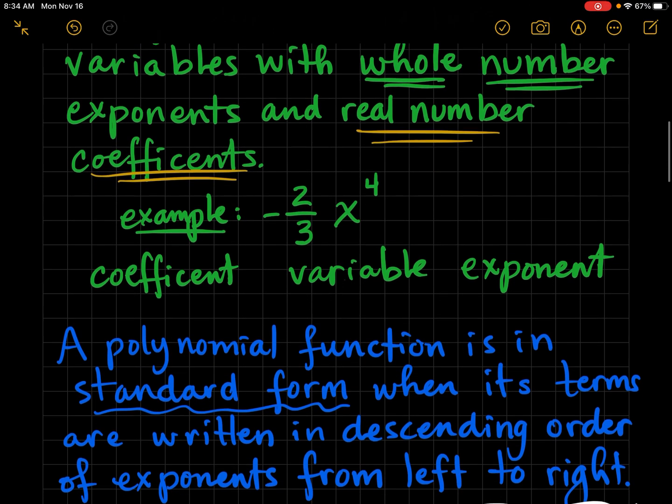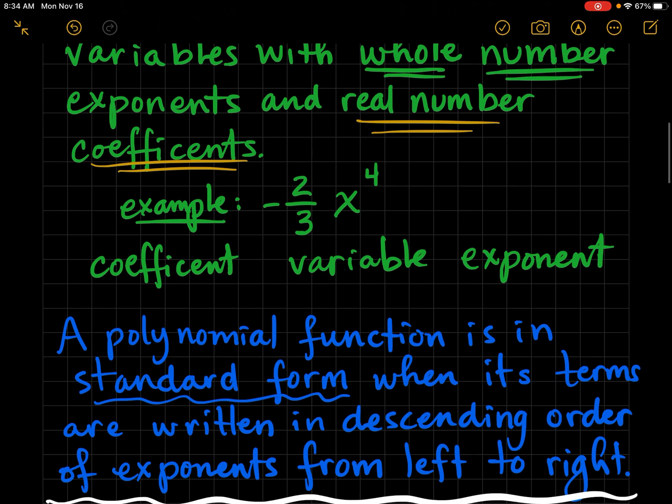Here's an example: negative two-thirds x to the fourth. The coefficient is negative two-thirds, the variable is x, and four is the exponent.